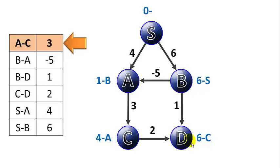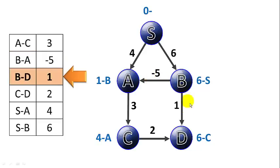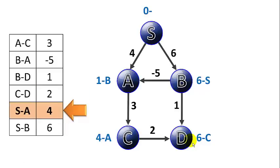Starting iteration 4. A to C of 3: we already have distance 4 to C. B to A of negative 5: already used. B to D of 1: we've already found a cheaper path to D through C. C to D of 2: already used. S to A of 4 is worse, S to B of 6 is unchanged. This iteration, we made no changes to any distances or predecessors, so we can exit the loop early. Ordinarily we'd do V iterations (one per vertex), but if no changes occur in an iteration, we can exit prematurely.